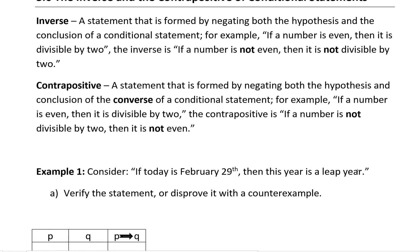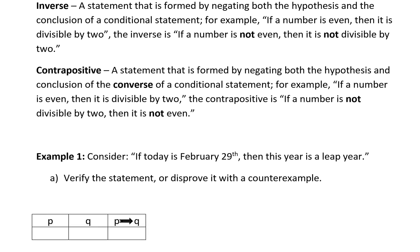The contrapositive is a statement that is formed by negating both the hypothesis and the conclusion of the converse of a conditional statement. For example, if a number is even, then it is divisible by 2. The contrapositive would be: if a number is not divisible by 2, then it is not even. In short form: for the inverse, we negate; for the contrapositive, we negate and switch.